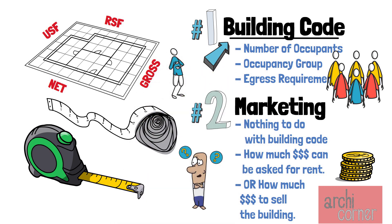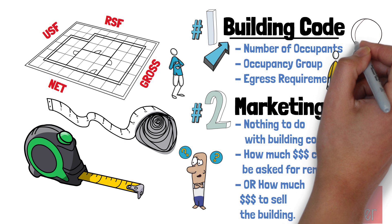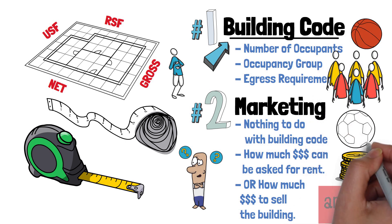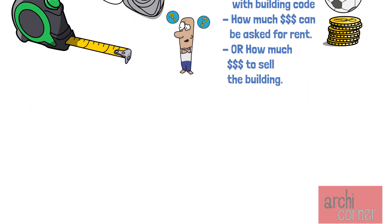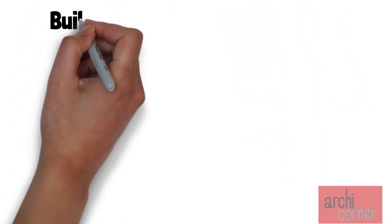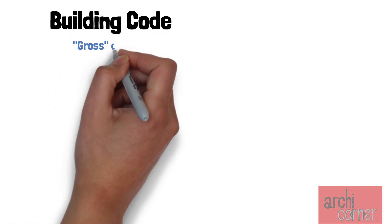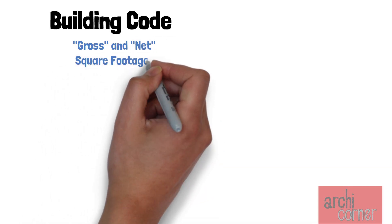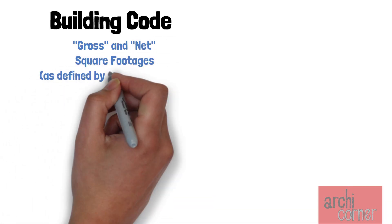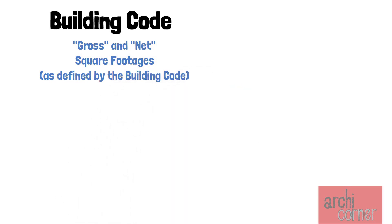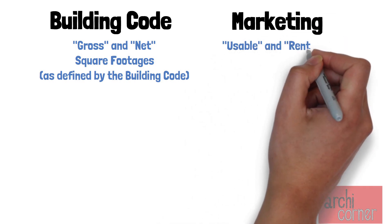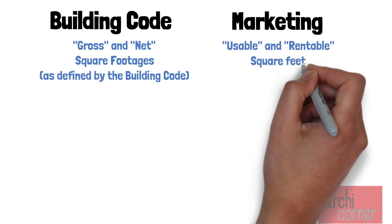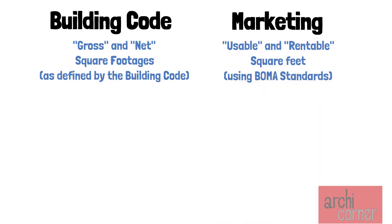Anyway, once you figure out what sport you're playing — I mean, what reason you need to get these measurements — you realize which measuring method you need. If you need to get square footages to comply with building code, then you must use gross and net square footages accordingly, as defined by the building code. If you need these square footages for marketing, then you must use usable and rentable square feet, and under normal circumstances you use BOMA standards to figure that out.